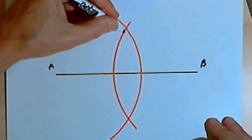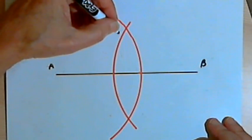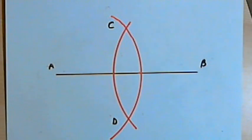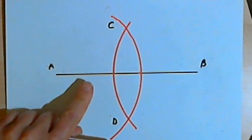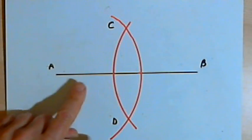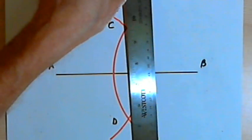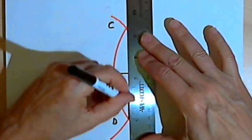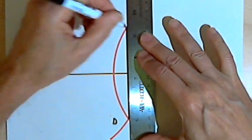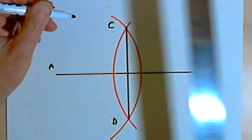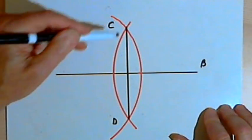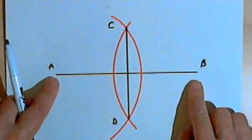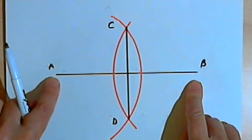Now let's label the places where those two arcs intersect as C and D. To create a perpendicular bisector to AB, all I have to do is connect C and D with a straight line. So line CD is going to be a perpendicular bisector to AB.